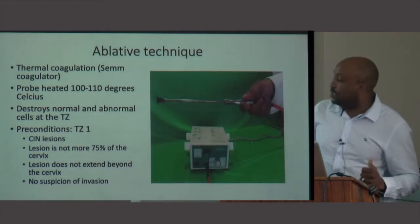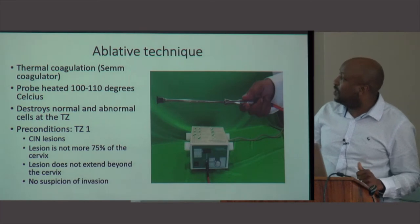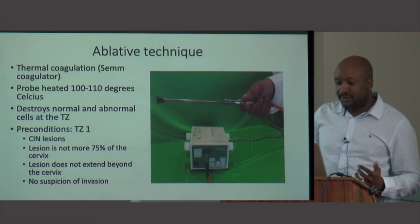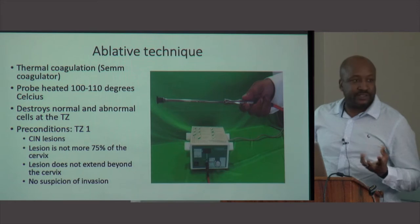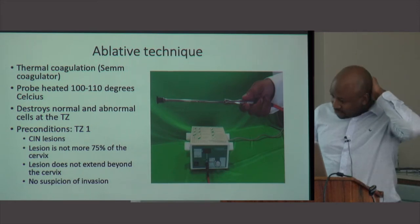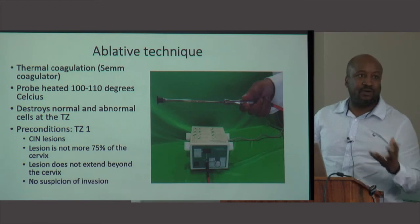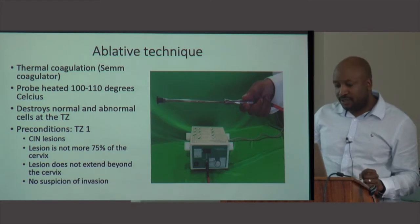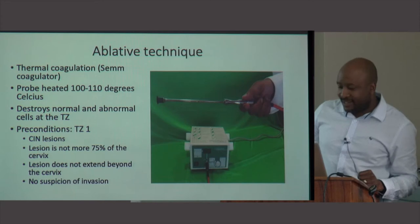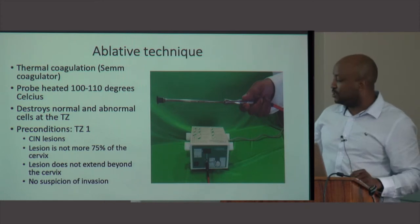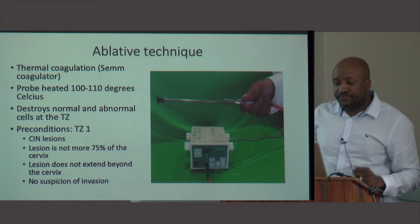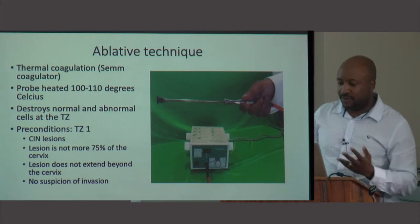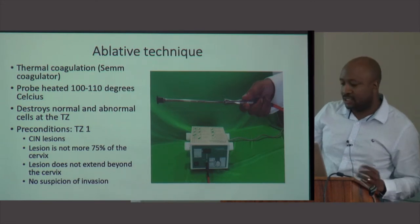Another technique is thermal ablation, which uses heat of about 100 to 110 degrees Celsius to destroy the transformation zone. It's similar in concept to cryotherapy. You use a probe that is applied to the transformation zone. The criteria for using ablative therapy are essentially the same as for cryotherapy.